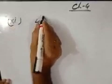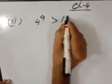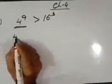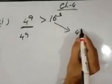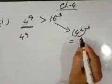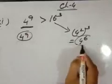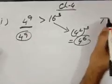Question number 2, point number 11: 4 to the power 9 is greater than 16 to the power 3 — true or false? Keep 4 to the power 9 as is. On the right side, since 4 squared equals 16, we write 16 to the power 3 as 4 squared to the power 3, which equals 4 to the power 6. Comparing 4 to the power 9 and 4 to the power 6, clearly 4 to the power 9 is greater. So it is true.